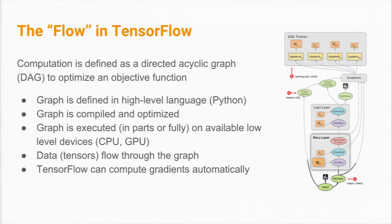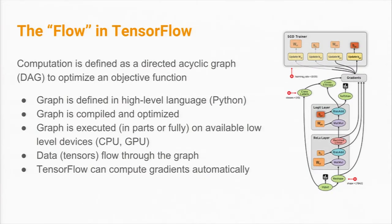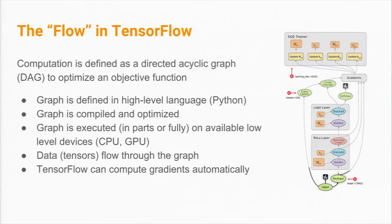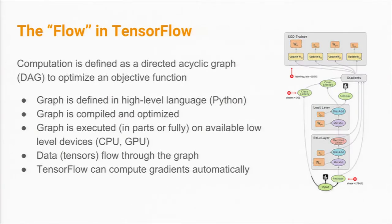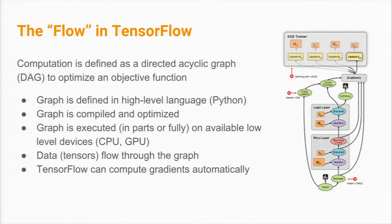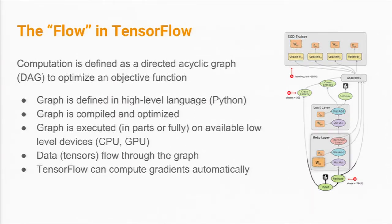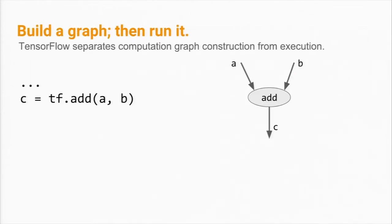In a second step, the graph is compiled and optimized, and then you can execute it. The compilation and optimization part gives you portability across all these different platforms, including distributed systems. Another convenient feature is that TensorFlow can automatically compute the gradients that are so important, especially in deep neural network models — saving you from lots of tiny errors.